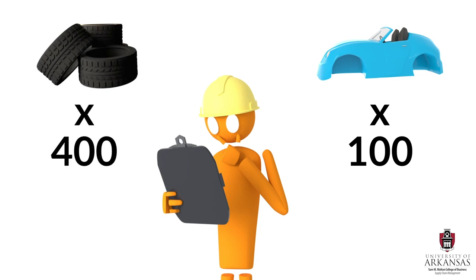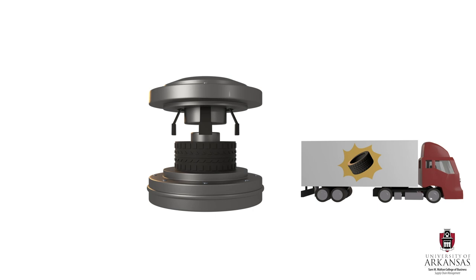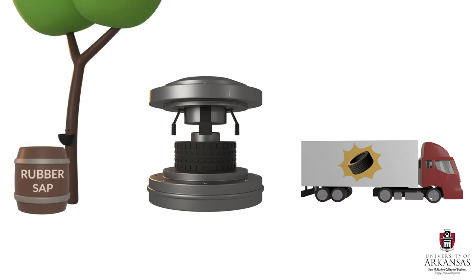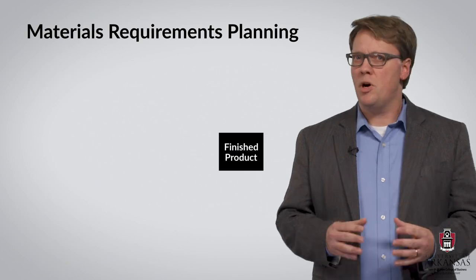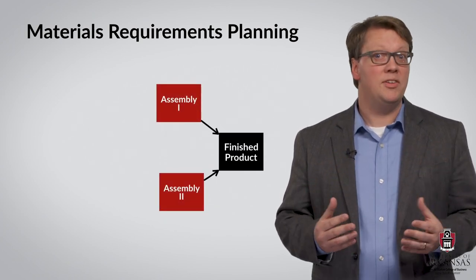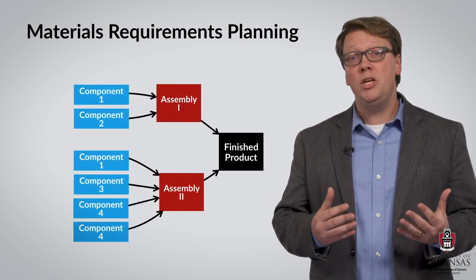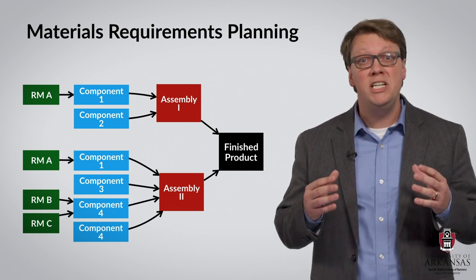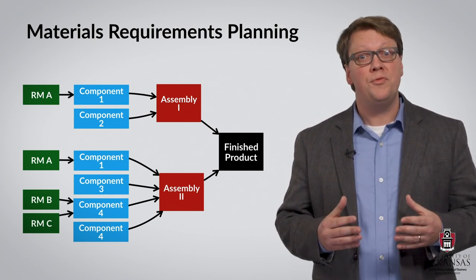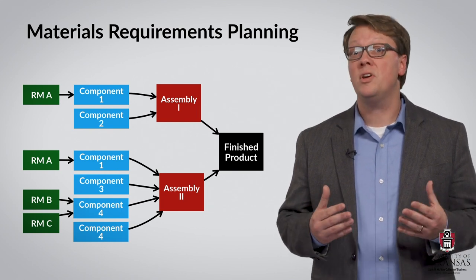In fact, if an automobile manufacturer wants to assemble 100 vehicles, they know that they will need 400 tires on hand by the time assembly begins. And looking further upstream, this has implications for when these tires must be shipped and manufactured, and when raw materials for these tires must be sourced. That is the purpose of Materials Requirements Planning: for a given finished product, MRP lets us determine when and how many raw materials, components, and parts inventories are needed to make sure the finished product will be ready for the customer.